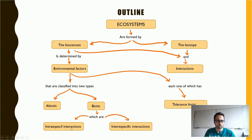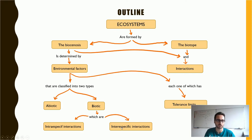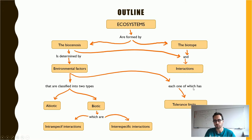If living beings interact with individuals that belong to the same population — and a population is a group of organisms that belongs to the same species — we can be talking about intraspecific interactions: interactions between organisms that belong to the same species. On the other hand, we have interspecific interactions: relations between individuals that belong to different species. Depending on which environmental factor we are talking about, we also have to consider the tolerance limits for that factor, because this is going to affect each specific living being.